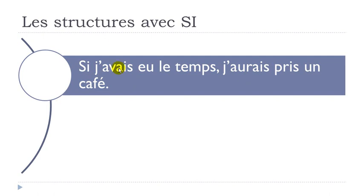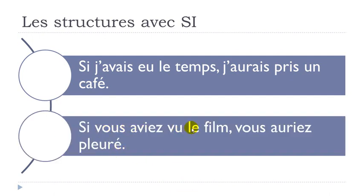SI J'AVAIS EU LE TEMPS — AVOIR at the PLUS-QUE-PARFAIT form — J'AURAIS PRIS — PRENDRE, to take — at the CONDITIONNEL PASSÉ form — UN CAFÉ. Second example: SI VOUS AVIEZ VU LE FILM — VOIR at the PLUS-QUE-PARFAIT — VOUS AURIEZ PLEURÉ — PLEURER, to cry — at the CONDITIONNEL PASSÉ form. If you had seen the film, you would have cried. This is the classic structure to express regrets with the IF structure.